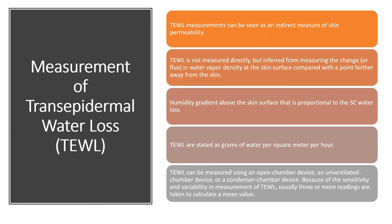The humidity gradient above the skin surface is proportional to stratum corneum water loss and is stated in terms of grams of water per square meter per hour. It can be measured using an open chamber device, an unventilated chamber device, or a condensing chamber device. Because of sensitivity and variability in TEWL measurements, three or more readings are taken to calculate a mean value.